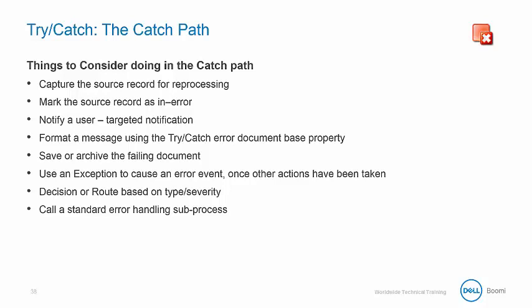Some things to consider doing in the catch path include: capturing the source record for reprocessing, marking the source record as in error, notifying a user with a targeted notification, formatting a message using the try-catch error document-based property, saving or archiving the failing document, using an exception shape to cause an error event once other actions have been taken, adding a decision shape or a root shape based on type or severity, and calling a standard error handling subprocess.